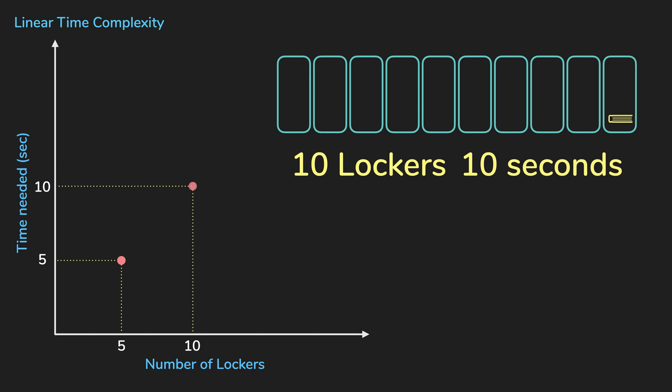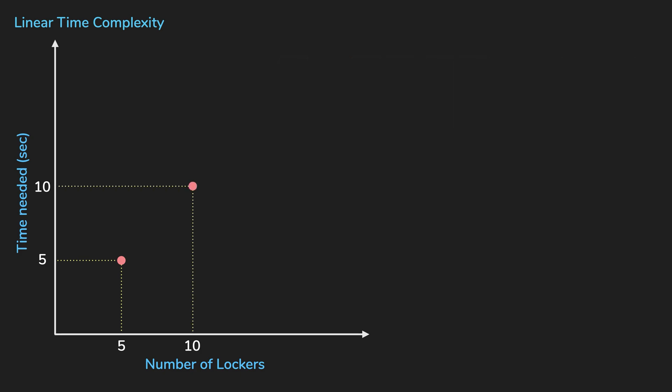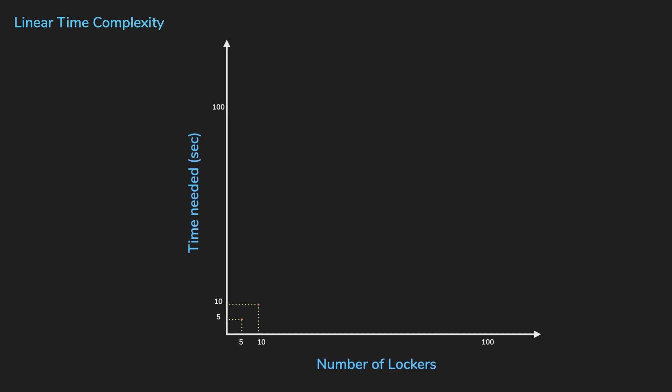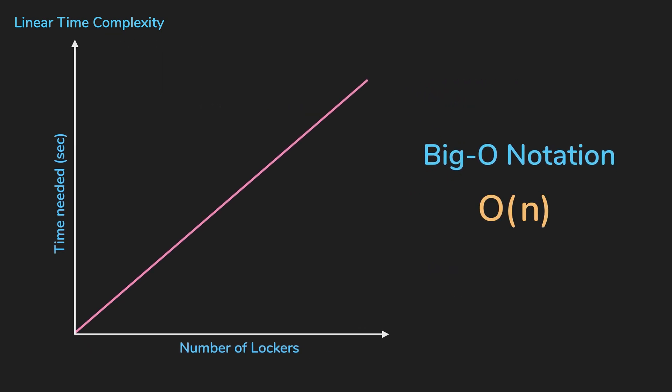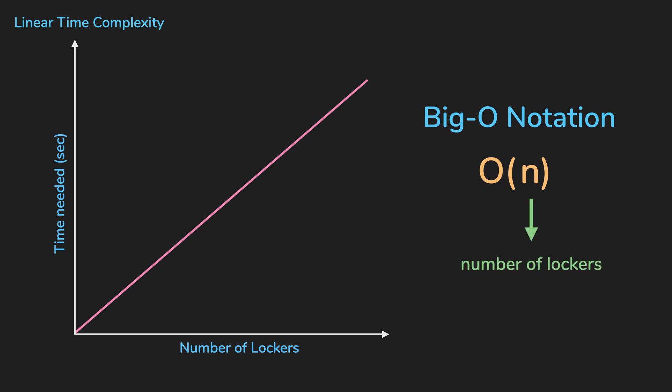You can see that the time needed to find that book increases linearly as the number of lockers you need to check gets larger. In big O notation, this would be expressed as O of N, where N represents the number of lockers you'll need to scan.